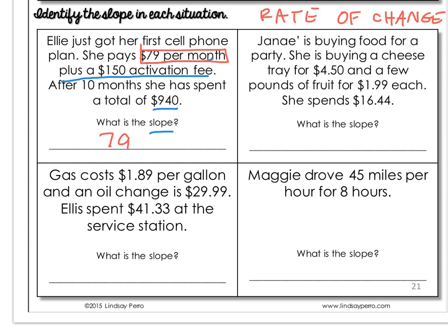The run is 1, but $79 over 1 is $79. In the next example, Janae is buying food for a party. She is buying a cheese tray for $4.50 and a few pounds of fruit for $1.99 each, and she spends $16.44. What is the slope or rate of change? The price per pound of fruit is $1.99, so the slope is $1.99.